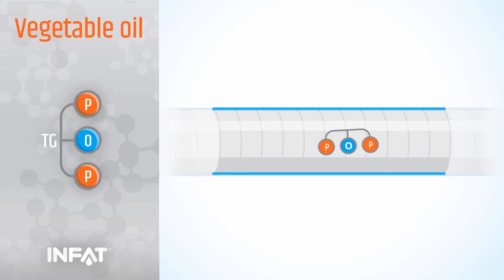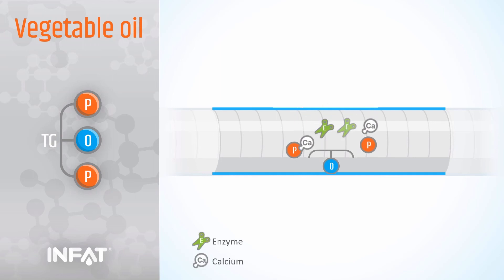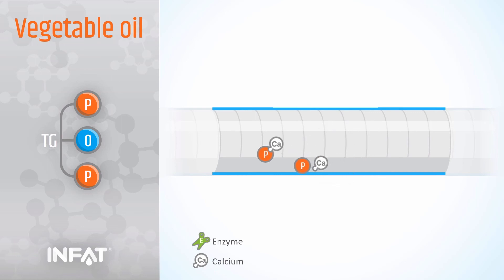In this case, the palmitate is on positions SN1 and SN3. When it reaches the intestines, it is cleaved by an enzyme. However, while the monoglyceride is easily absorbed, the free palmitic acid is not.